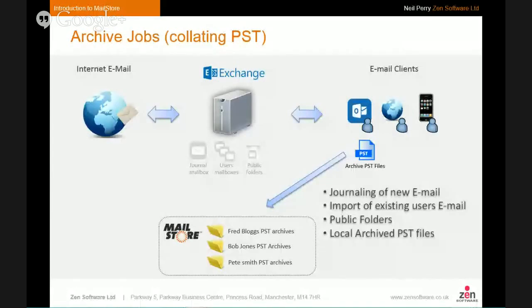The final job we often set up is the ability to bring in existing PST archives. Over time, users often create PST archives by pulling mail out of Exchange and storing it locally on their machines — a very inefficient way of archiving email. You can run a job specifically to bring those PSTs together into MailStore, storing each one under the relevant user's archive. Once the PST files have been archived, they can be deleted — it's a one-time job to bring that data together.